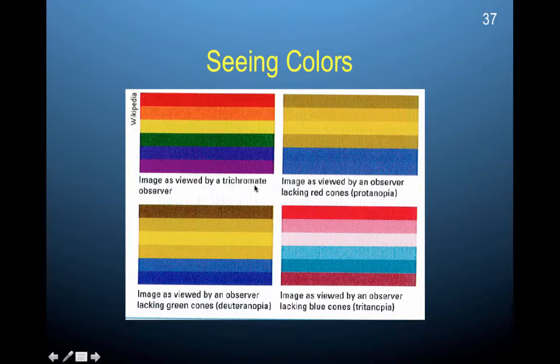They have cones that process red, green, and blue wavelengths. There are people that don't have all three pigmented cones — they could lack one.